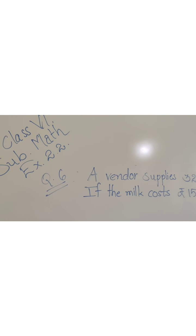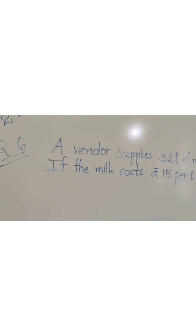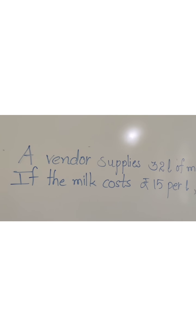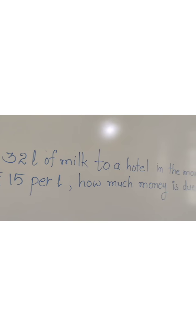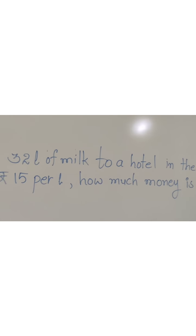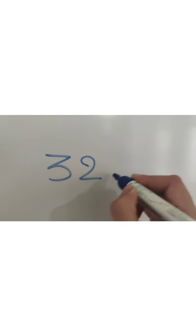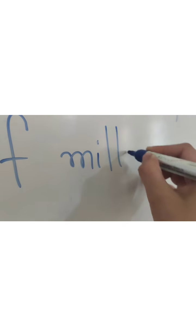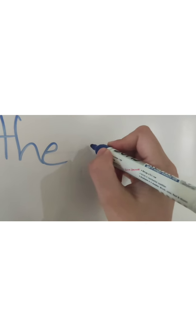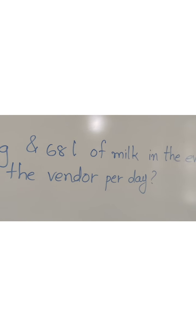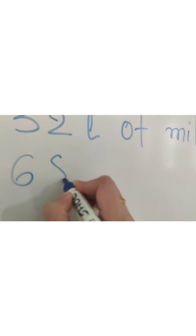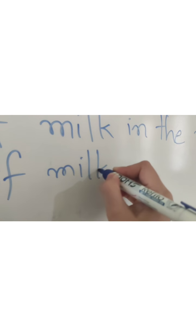Understood? Now let's move to Question 6. A vendor supplies 32 litres of milk to a hotel in the morning. From this sentence, we get the milk delivered in the morning — 32 litres. And 68 litres of milk in the evening. So we note: 68 litres in the evening.